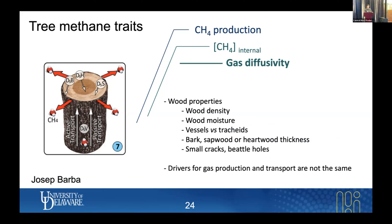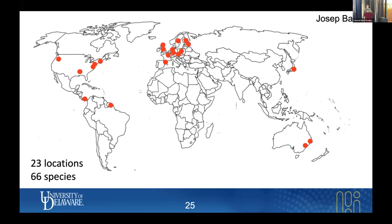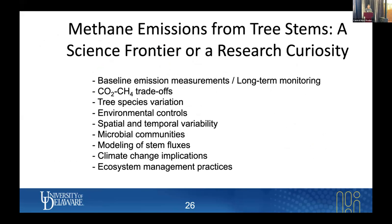He focused on wood properties and a series of characteristics this project will look at. The idea is to do crowd science — he asked for help from many people, and maybe several of you have participated. Right now he has about 23 locations and 66 species around the world. The data is being processed and collected, and this is how the community is participating in this global effort.